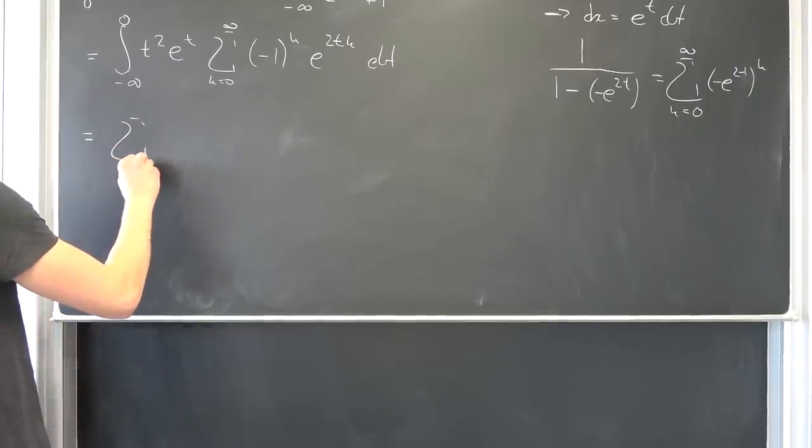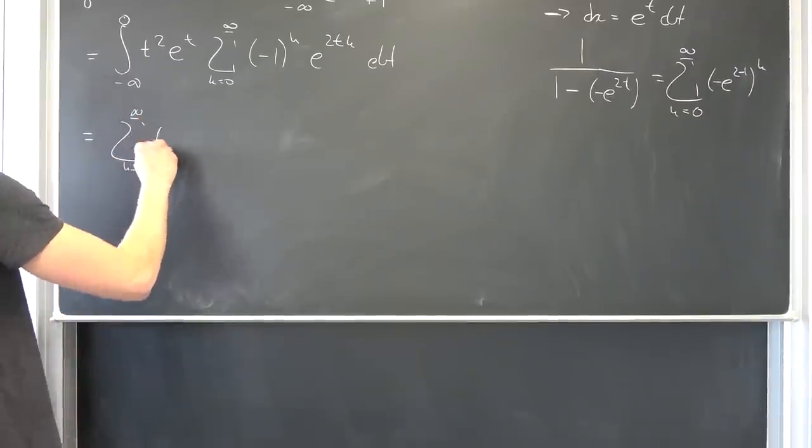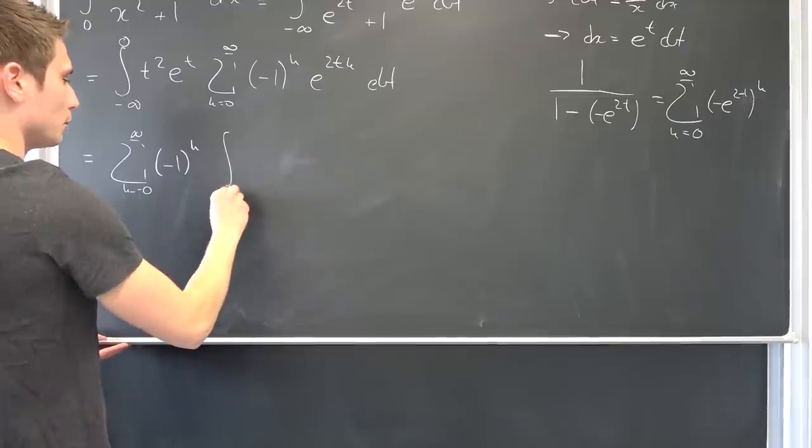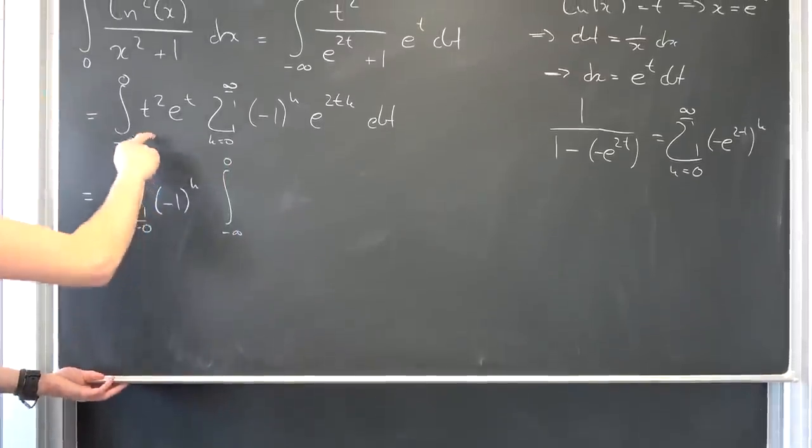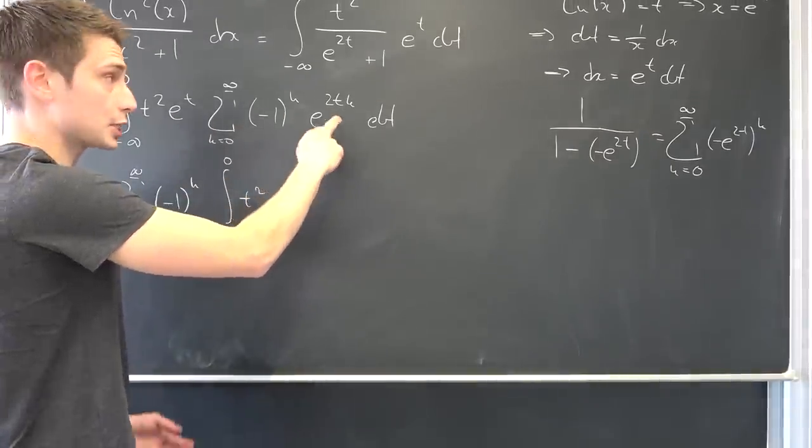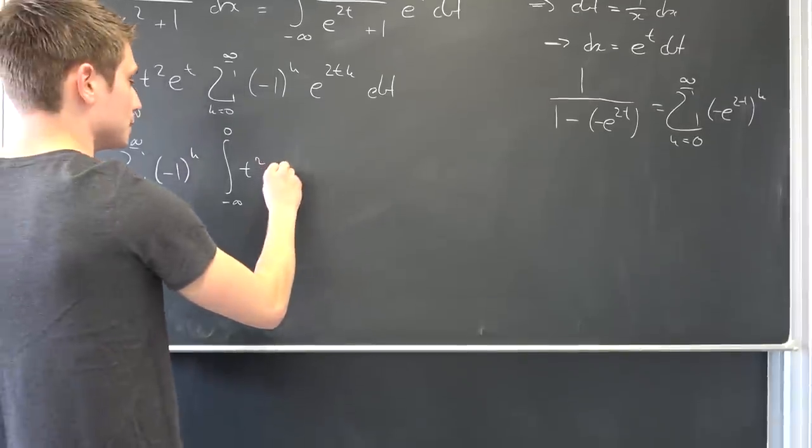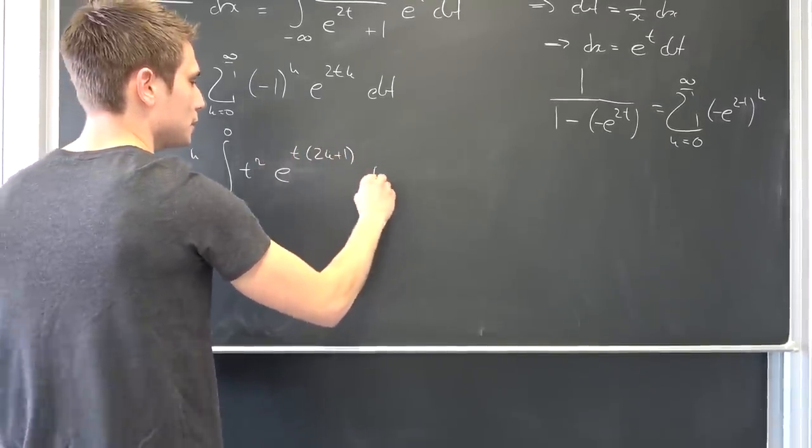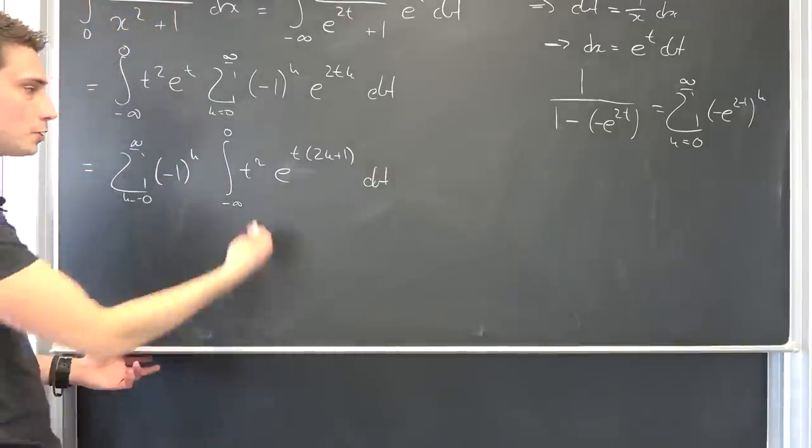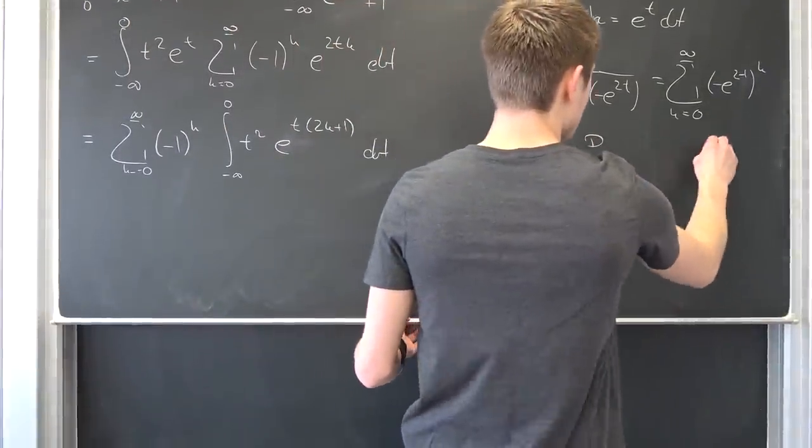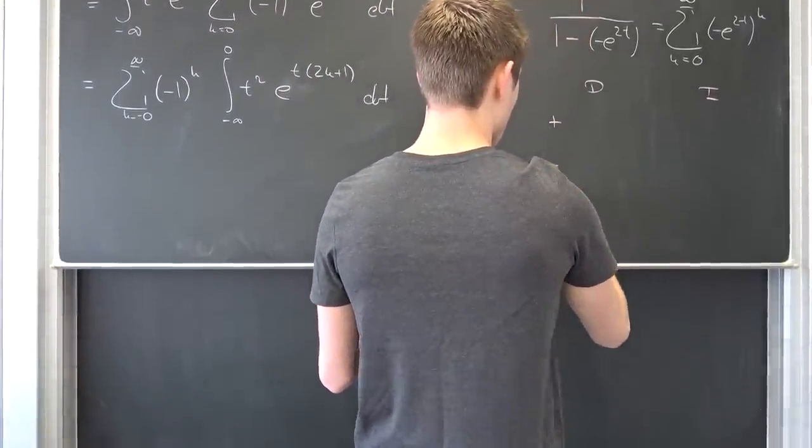We can bring this negative 1 to the kth power to the outside. So we are going to end up with a sum running from k equals 0 to infinity, negative 1 to the kth power. Also we have an integral from negative infinity to 0, t squared e to the t times 2k plus 1, integrated with respect to t. And now it's a simple job for integration by parts. Meaning we have to differentiate something and integrate something: plus, minus, plus, minus.